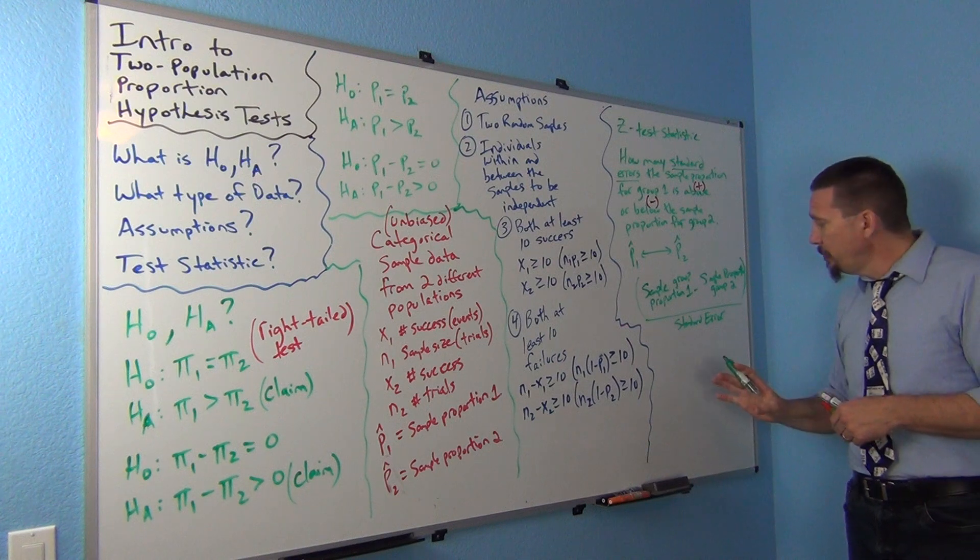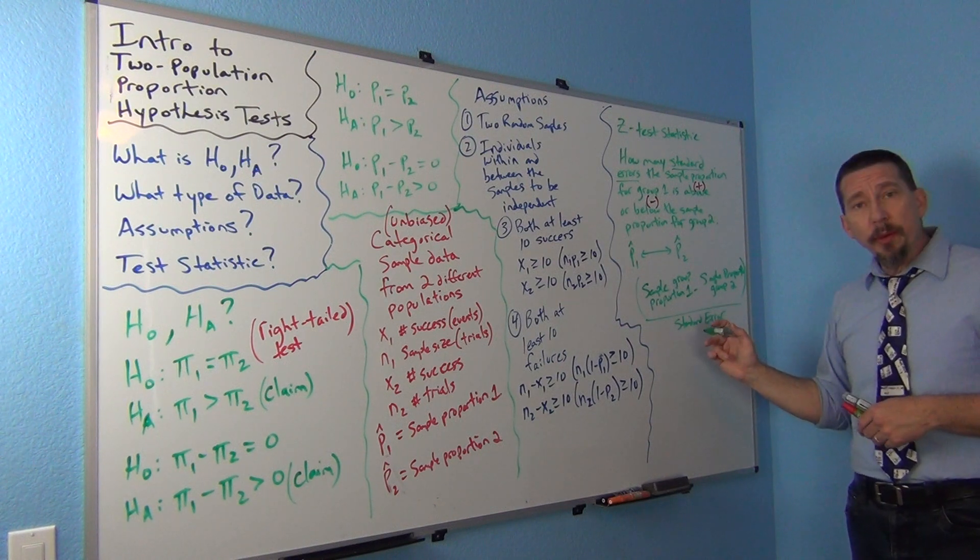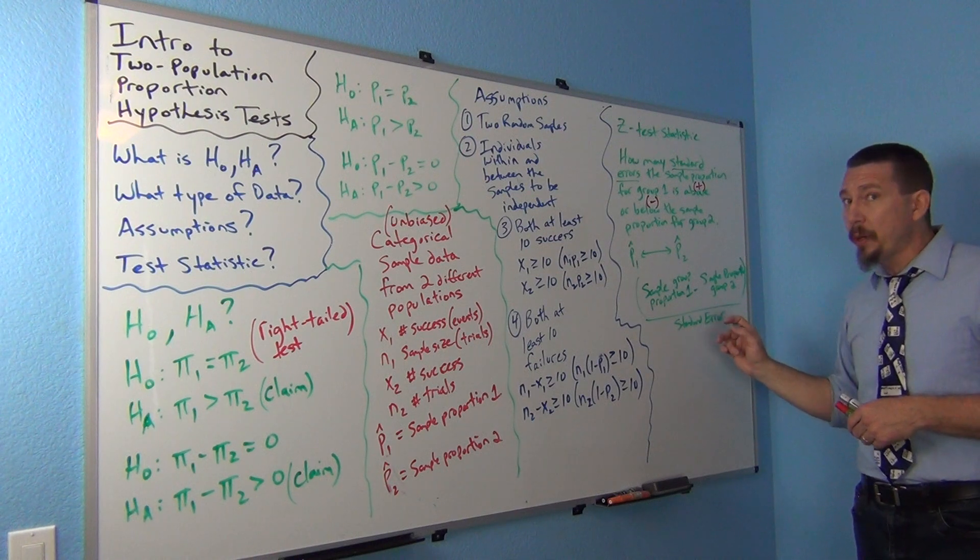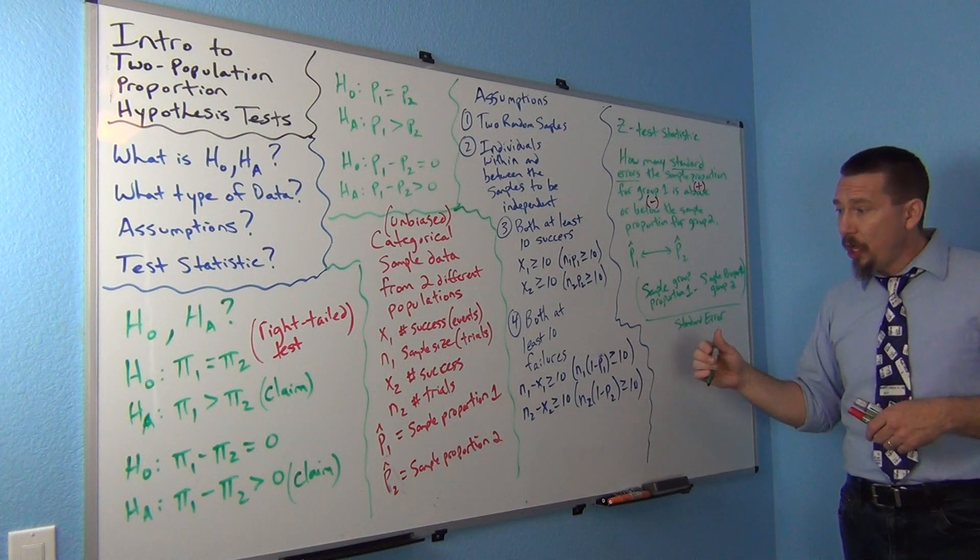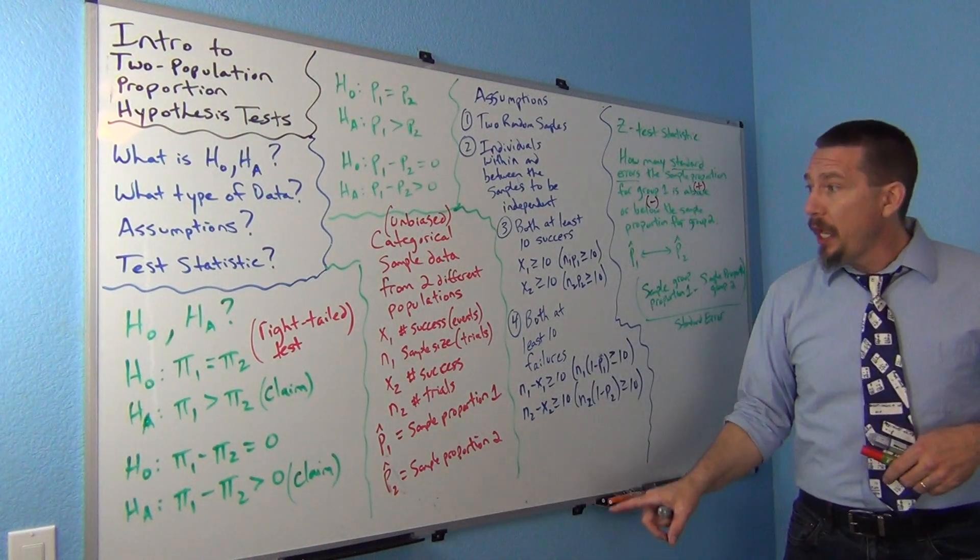Now, here's where we get into a little bit of an interesting change, okay? Now, if you guys remember, standard error calculation for two population confidence intervals involved using P1 hat and P2 hat, okay? And that is correct.